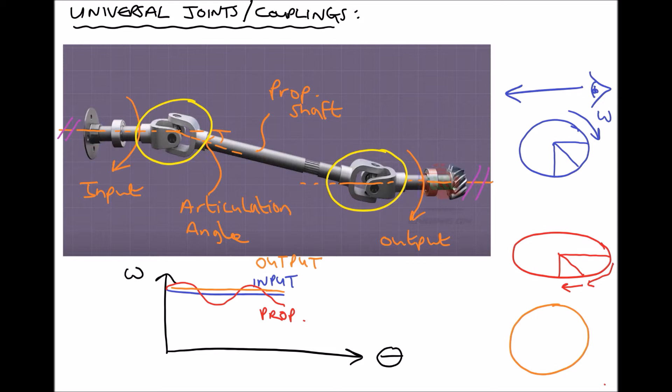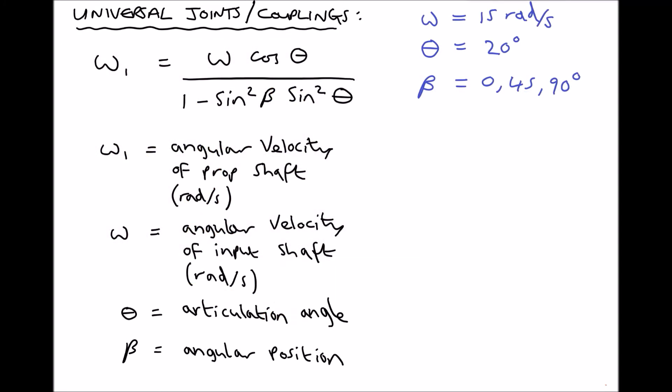In the second part of this video we're going to look at the formula that can be used to determine the fluctuations in angular velocity for our prop shaft. The formula gives omega 1, the angular velocity of the prop shaft, in terms of omega, the constant angular velocity of the input shaft. There are two angles involved: the articulation angle, which is the difference in angle between the axis of rotation of the input and the prop shaft, and beta, which is the angular position. For our examples, the input shaft angular velocity is fixed at 15 rad/s, the articulation angle is 20 degrees, and we'll calculate at angular positions of 0, 45, and 90 degrees.